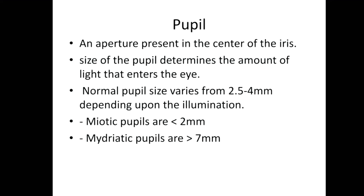Ideally, the size of the pupil should always be checked in the dimmest illumination possible. Depending upon the size of the pupil, it can be miotic or mydriatic. A miotic pupil is a constricted pupil with a size of less than 2 mm, and mydriatic pupils are dilated pupils with a size of more than 7 mm.